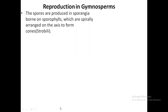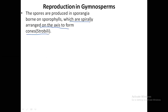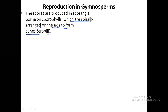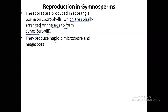The first property: spores are produced in sporangia, borne on sporophylls, which are spirally arranged on the axis to form cones or strobili. The spores are developed in sporangia, and the sporangia are on sporophylls, which are leaf-like structures. Sometimes they are spirally arranged around the central axis, which is called the strobili, also known as cones.